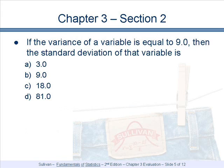If the variance of a variable is equal to 9, the standard deviation of that variable is. Recall the variance is the square of the standard deviation. Therefore, in order to find the standard deviation, we must take the square root of the variance.